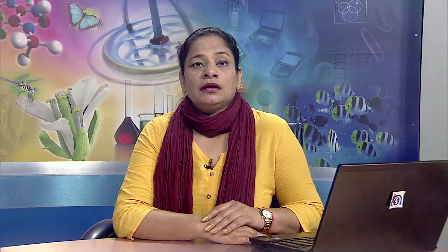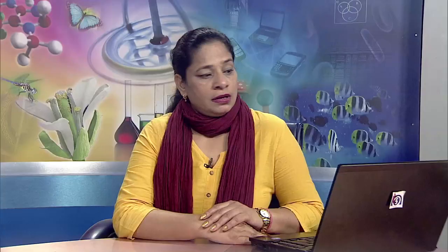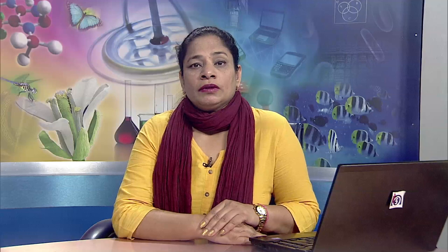Consequences of wind erosion: it removes finer soil material including organic material, clay and silt in suspension form, leaving behind coarser, less fertile material. The productive capacity of the soil is lost, and smaller colloidal soil fractions are lost. Wind erosion also damages roads and fertile agricultural fields by depositing large quantities of airborne soil particles. Remedial strategies: vegetation cover over sandy soil should be kept above 30 percent. Excess wind exposure to soil should be controlled by leaving stubble or mulch on the soil. Stubble is the remains of crop left after harvesting. Wind speed can be controlled by planting trees in the form of a shelter belt. Overgrazing by cattle should be avoided.